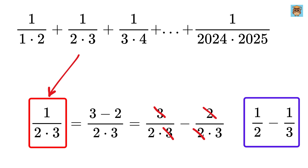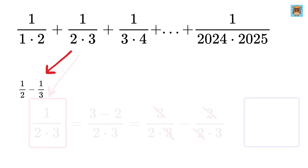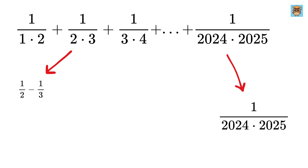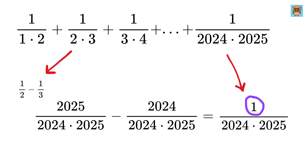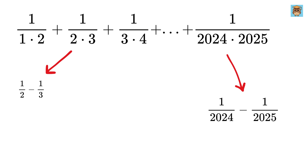So we've shown that 1 over 2 times 3 equals 1 over 2 minus 1 over 3. Now let's see if this trick works for the last term in our sum. Just like before, we can write the 1 in the numerator as 2025 minus 2024. Splitting into two parts, 2025 cancels from the first part and 2024 from the second, giving us 1 over 2024 minus 1 over 2025. So it turns out that any term of the form 1 over n times n+1 can be written as 1 over n minus 1 over n+1.